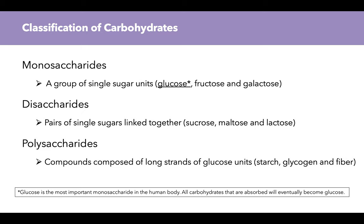Disaccharides are pairs of single sugars linked together. For those we have sucrose, maltose, and lactose, and each of those are composed of different combinations of the monosaccharides — we'll see that on the next slide. Finally, we have the polysaccharides. These are compounds composed of long strands of glucose units. For those we have starch, glycogen, and fiber.